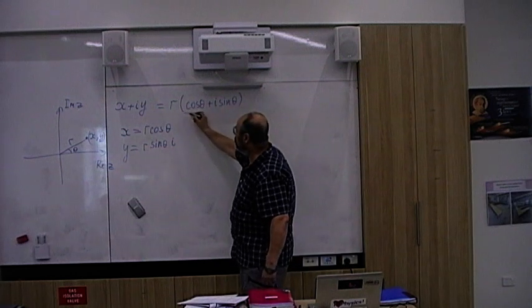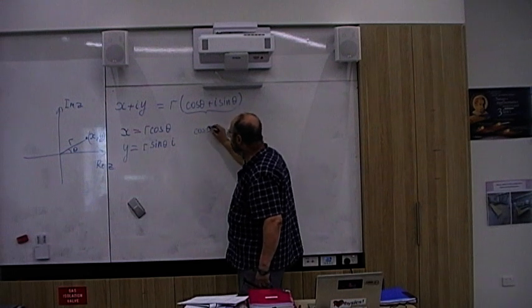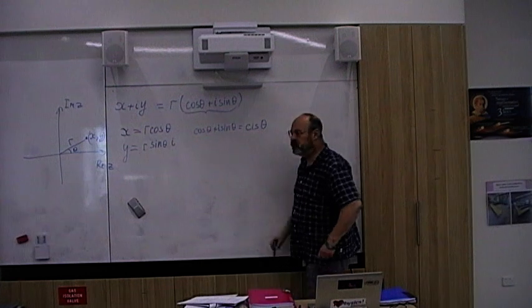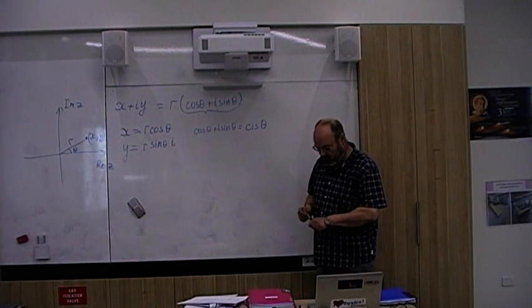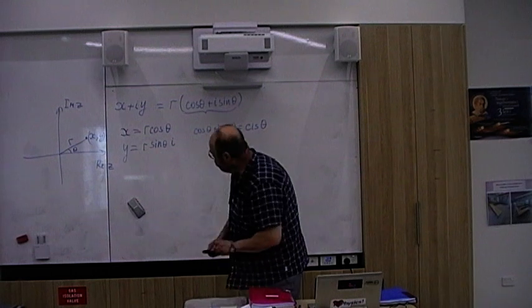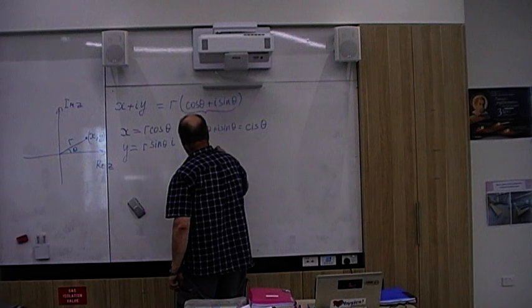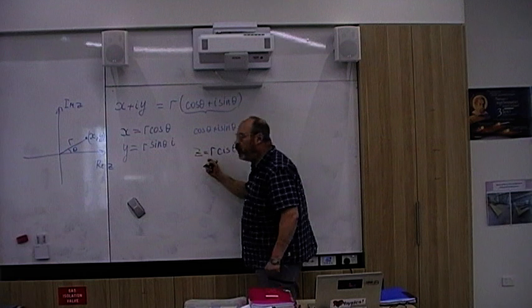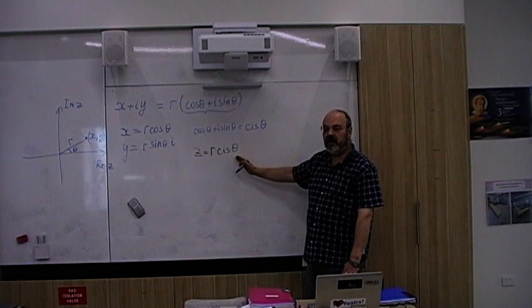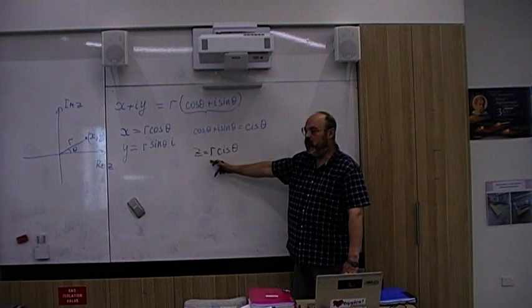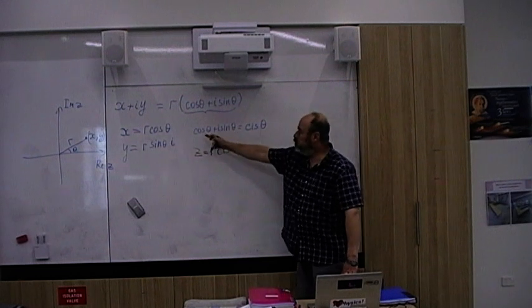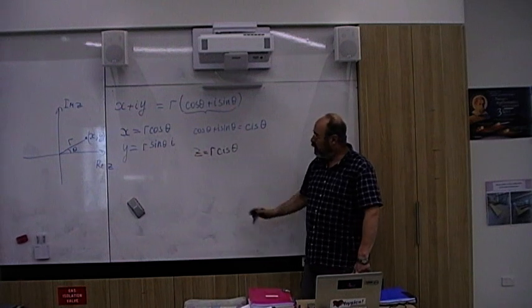Now, this expression cos theta plus i sin theta, we can write the complex number as z equals r cis theta, where r is called modulus, which is the distance from the origin, and theta is called argument.